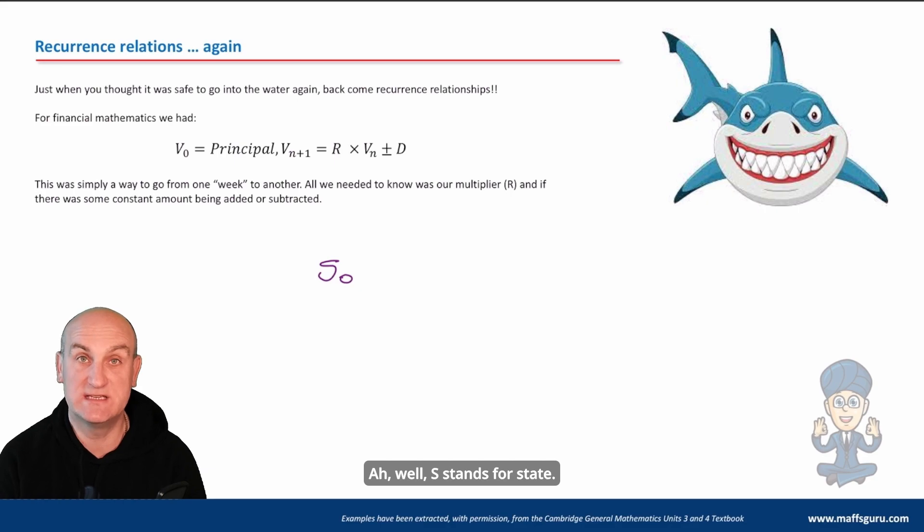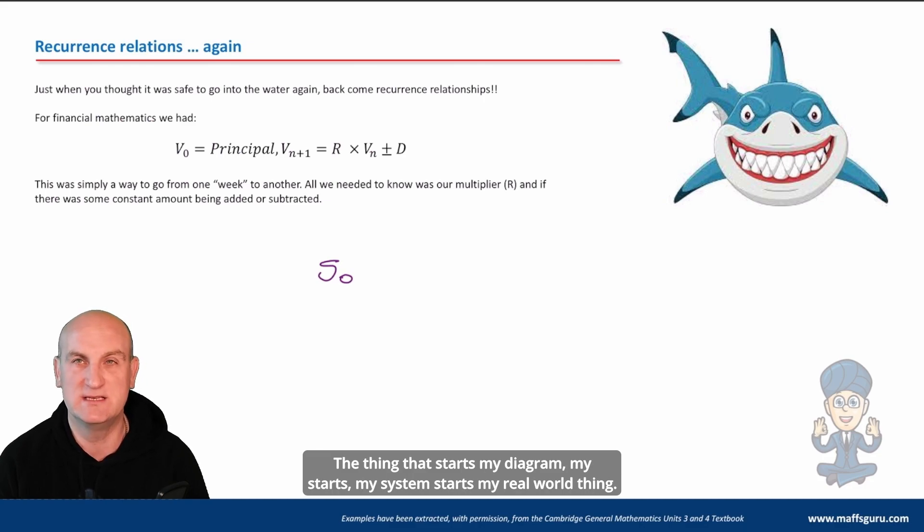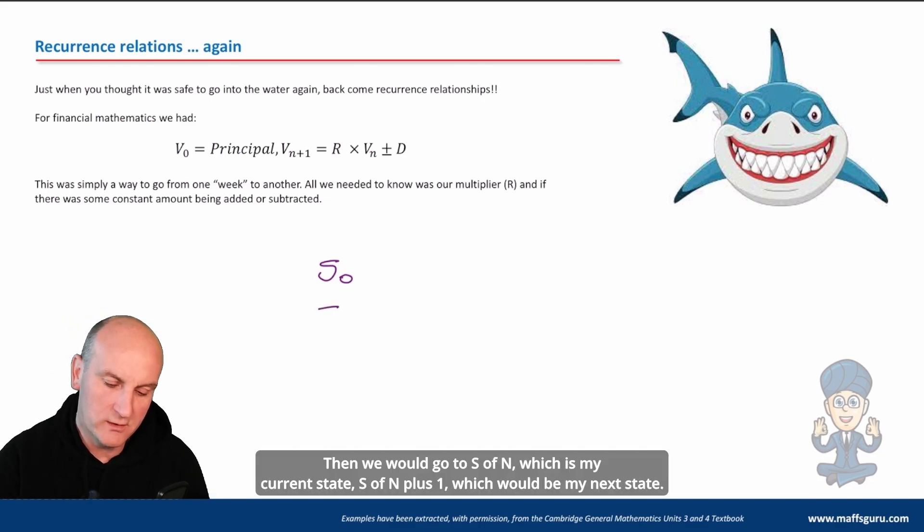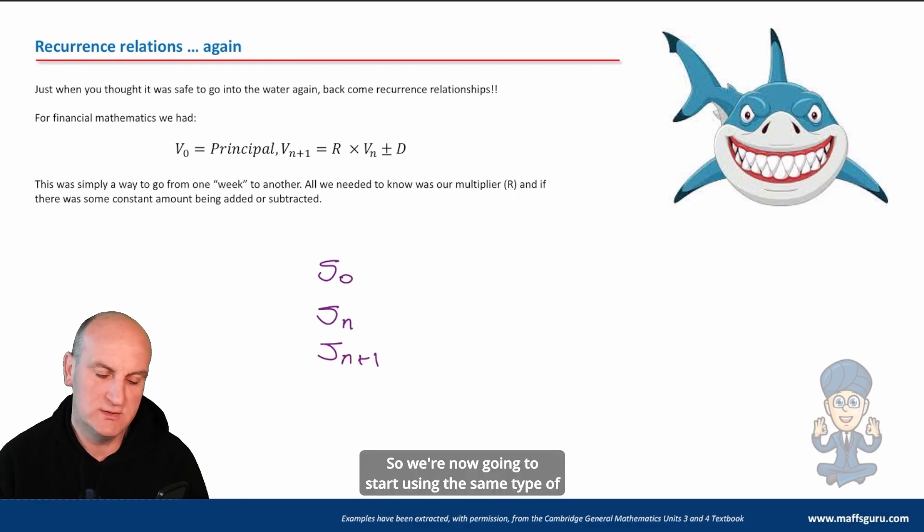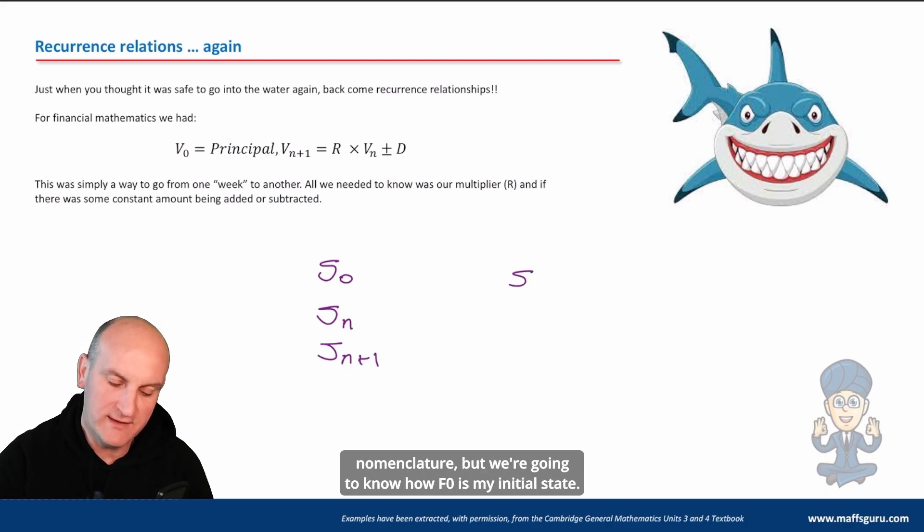Well, S stands for state, so we think of the real world as having states. So S₀ would be my initial state, the thing that starts my diagram, starts my system, starts my real world thing. Then we would go to Sₙ which is my current state, Sₙ₊₁ which would be my next state, and so it goes on. So we're now going to start using the same type of nomenclature.